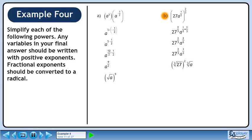We can write 27 to the 2 over 3 in radical form as the cube root of 27 squared. We can write a to the 1 over 3 as the cube root of a. The cube root of 27 is 3 and this is still being raised to the power of 2. 3 squared is 9. The answer is 9 times the cube root of a.